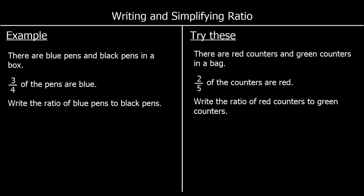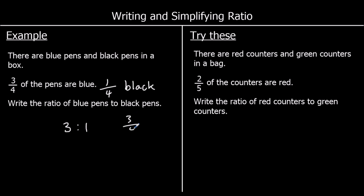Here's another question. There are blue pens and black pens in a box. Three quarters of the pens are blue. Write down the ratio of blue pens to black pens. So if three quarters of the pens are blue, the rest are black, so one quarter of the pens are black. Out of every 4 pens, 3 are blue and 1 is black. So three quarters to one quarter is the same as 3 to 1. The ratio of blue pens to black pens is 3 to 1. For every 3 blue pens, there's 1 black pen.